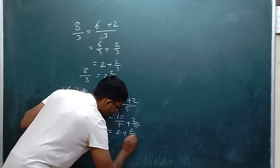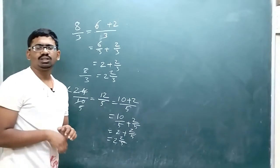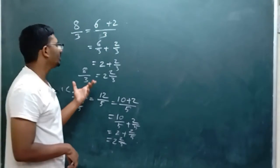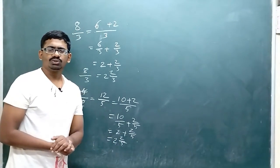The final answer is 2 and 2/5. This is the relationship between mixed numerals and improper fractions.